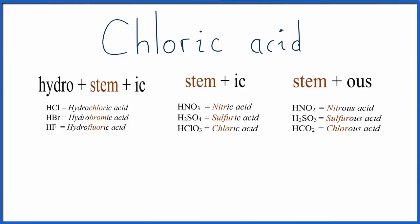To write the formula for chloric acid, HClO₃, we use this table and work backwards. There's no 'hydro' in front, so it can't be that set of rules. It does, however, end in 'IC,' so this is the type of acid we're dealing with.